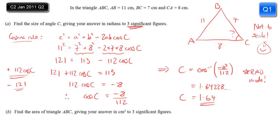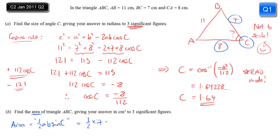And that's the answer to part A. In part B we want the area of the triangle. Here we can use the formula ½AB sinC, where A and B refer to two sides, and C must be the included angle - so the angle between those two sides. We know angle C, so we use sides A and B, either side of it. So it's ½ times 7 times 8 times sine of the angle that we just found, 1.64228...